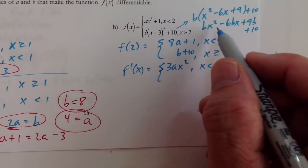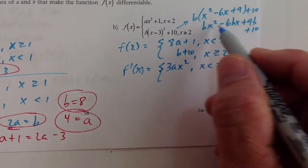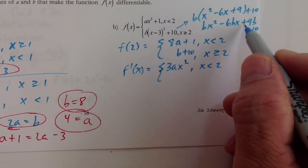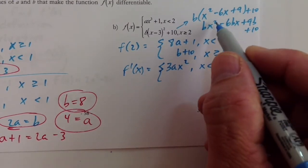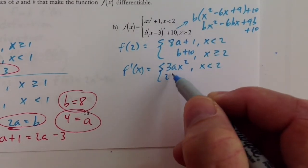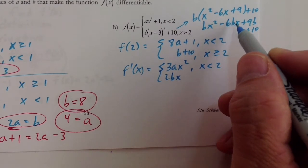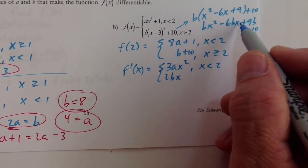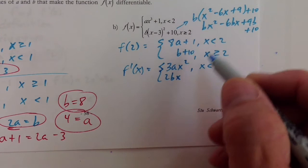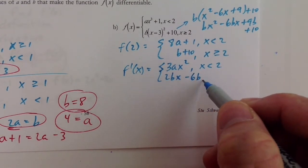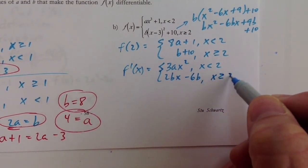And then on the bottom piece, remember, I multiplied all that out, and here it is here. So the derivative of the bottom piece would be 2bx minus 6b. Remember, a constant times x, the derivative is that constant, so minus 6b for x values that are greater than or equal to 2.